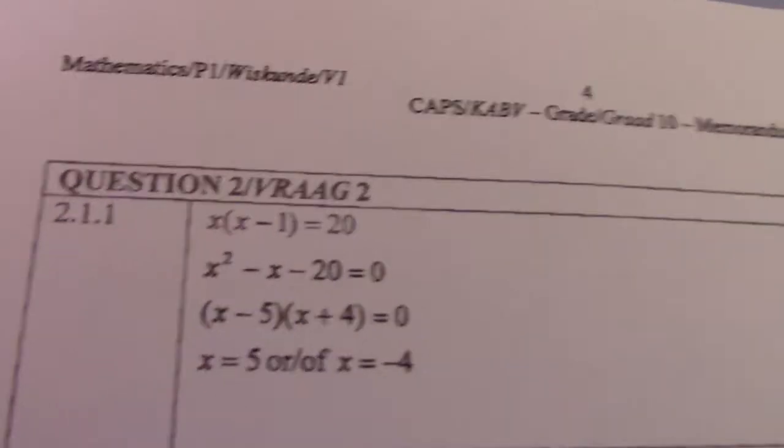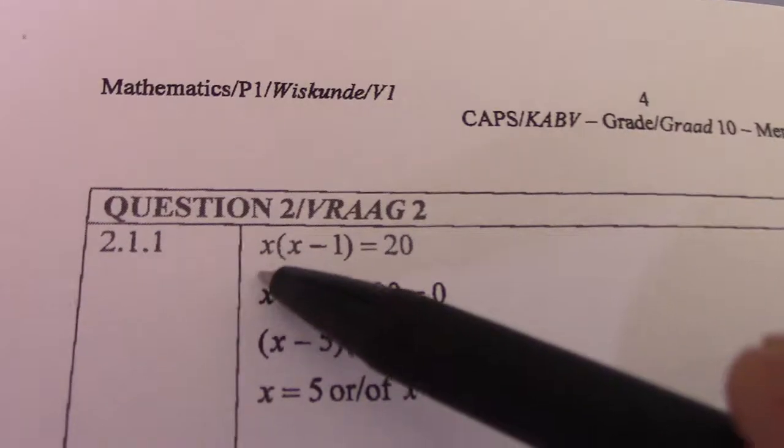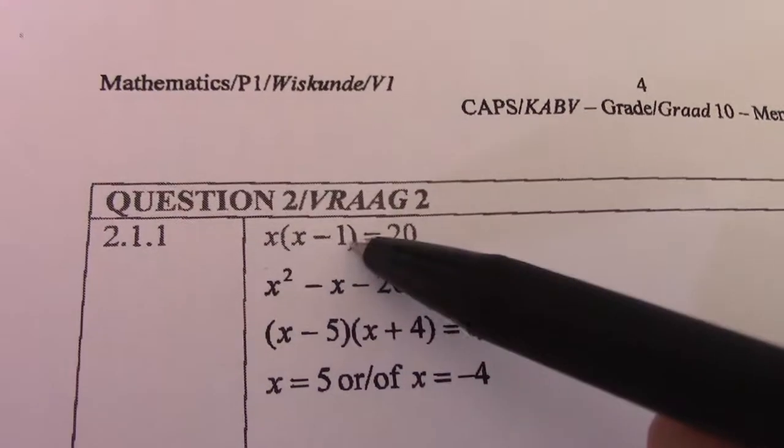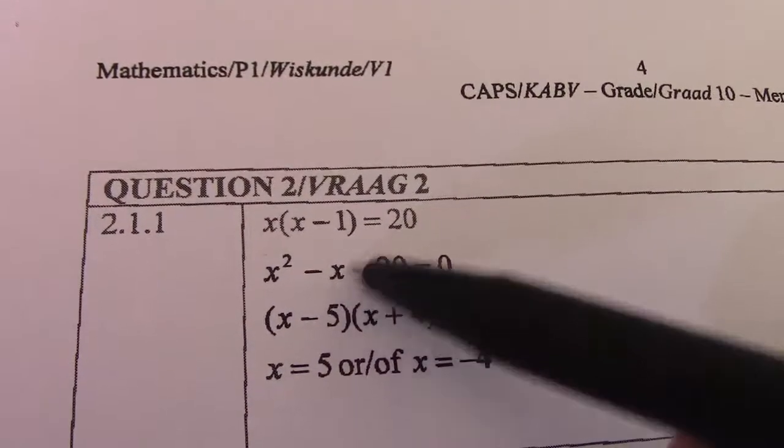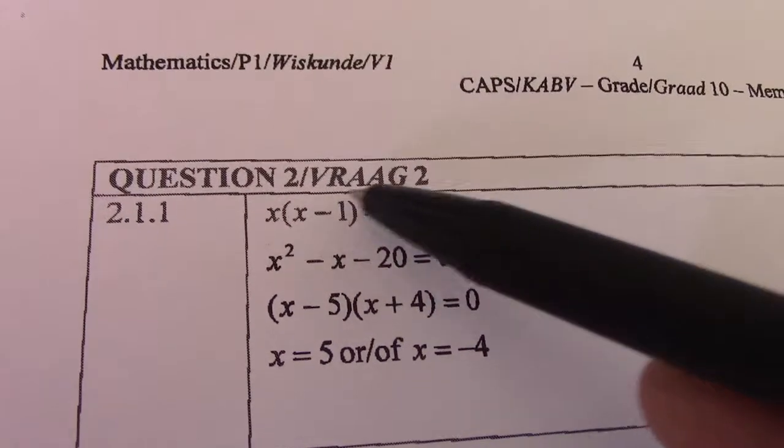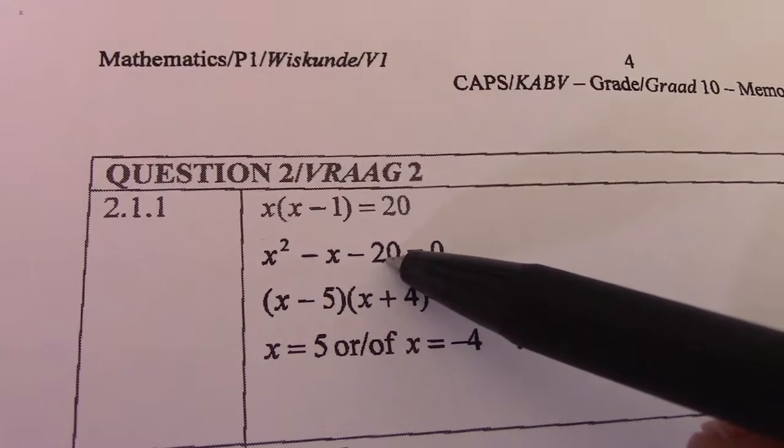As you can see, x times x is x squared. x times minus 1 gives me minus x. If I take positive 20 across the equal sign, it becomes negative 20.